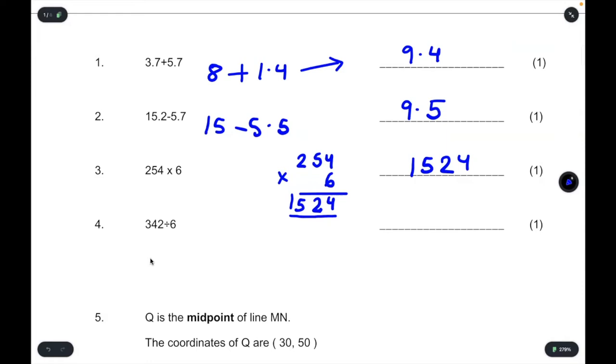Then for question 4, 342 divided by 6. How many 6 is going to 34? Well, 6 times 5 is 30. And we've got left over 4. 6 times 7 is 42. So the answer is 57.